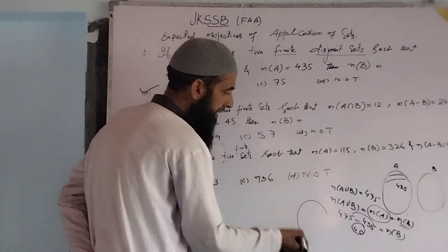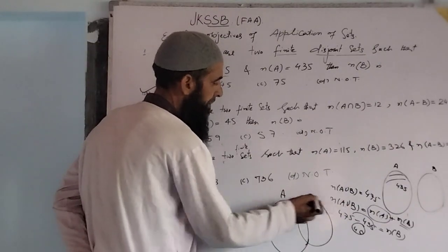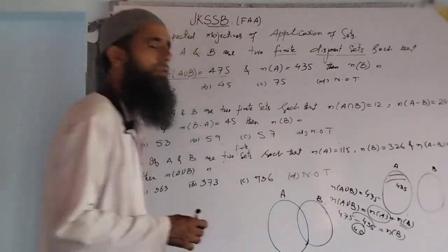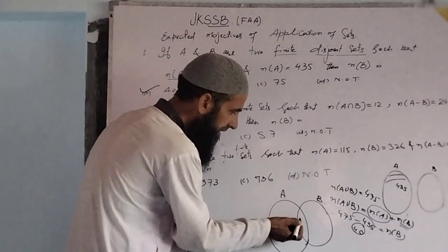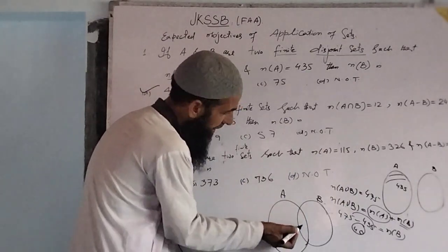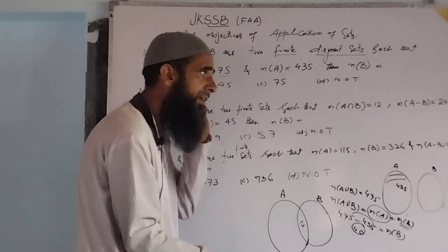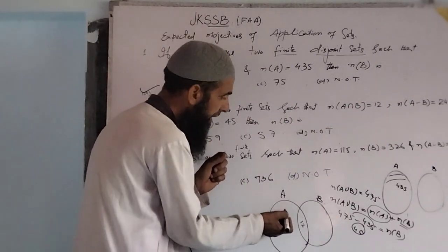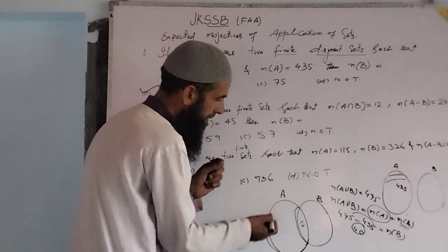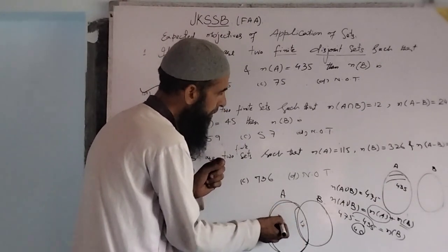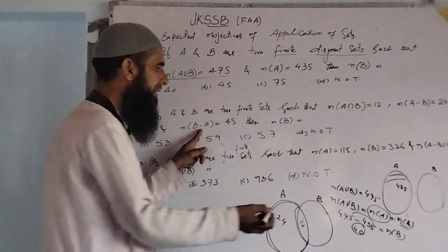Taking sets A and B: here is set A, here is set B. The intersection set contains 12 elements. The set A minus B contains 24 elements, and the number of elements in B minus A contains 45 elements.